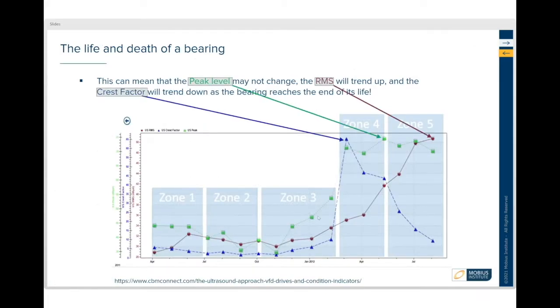We can trend changes by looking at how the RMS changes, how the peak level changes, how the crest factor changes, and not that it's shown here but even how the kurtosis changes, and understand where the bearing is in its life and death process.